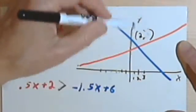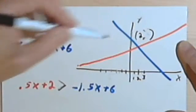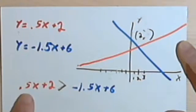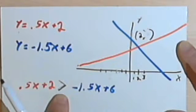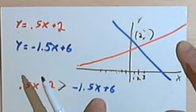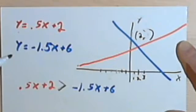I just want to know when, in terms of x, is .5x plus 2 more than, greater than, negative 1.5x plus 6. So let's look at the graph.